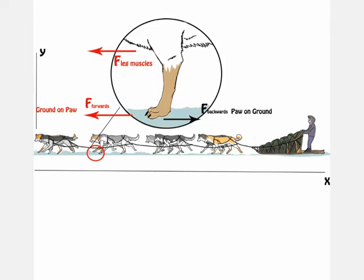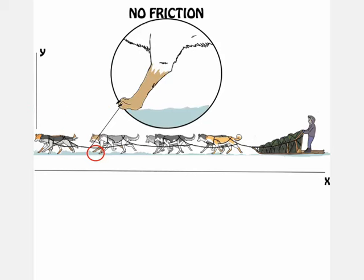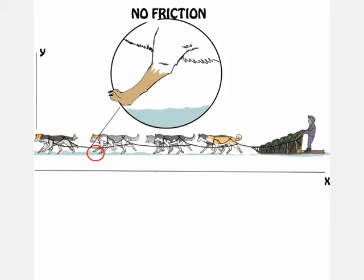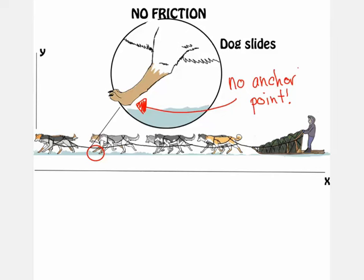So, while the static friction doesn't directly help the dog move forward, it does provide an anchor point, just like when we walk. Without this static friction, the dog wouldn't be able to run because she would slip.